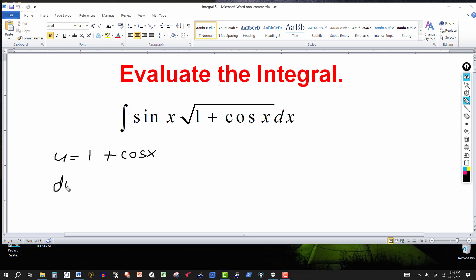The du would equal to, taking the derivative of the right side now, derivative of 1 is 0, derivative of cosine is minus sine, and this would be dx.